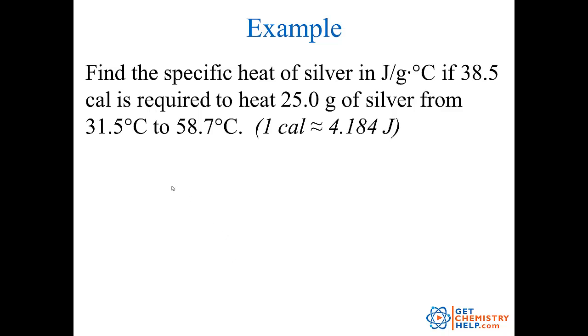Now let's try one last example. This one says, find the specific heat of silver in joules per gram degree Celsius. If 38.5 calories is required to heat 25 grams of silver from 31.5 degrees Celsius to 58.7 degrees Celsius. And it tells me that one calorie is approximately equal to 4.184 joules. So now we're trying to find specific heat. So that is the variable C in our equation.